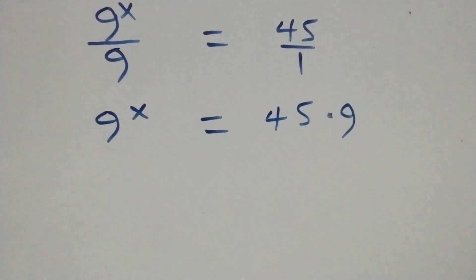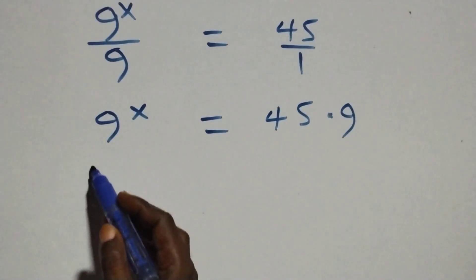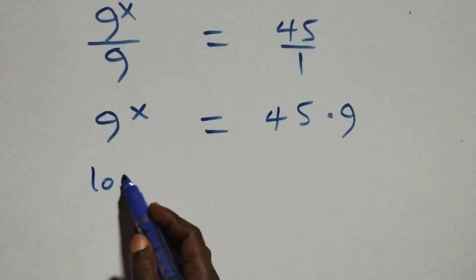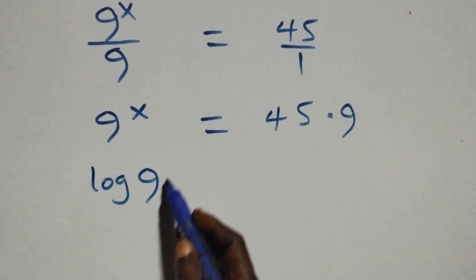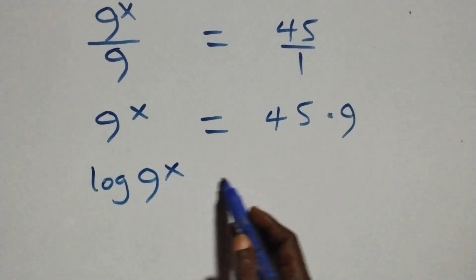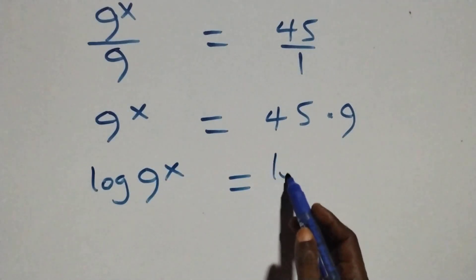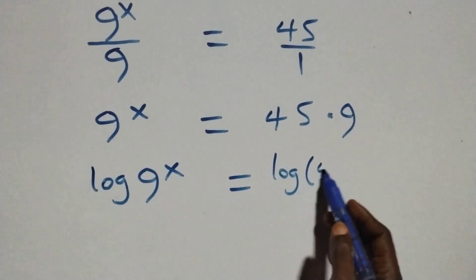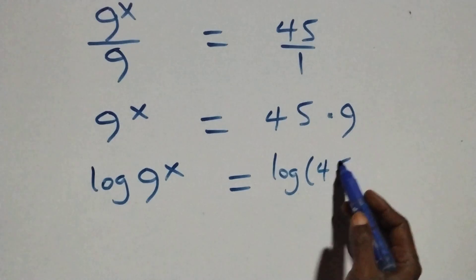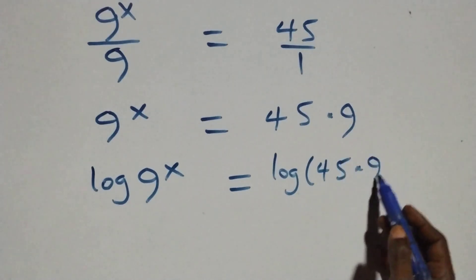Then we take the log on both sides. Here we have log of 9 raised to power x equals log of 45 times 9.